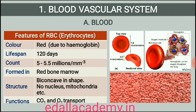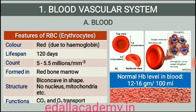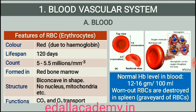RBCs are devoid of nucleus in most of the mammals and are biconcave in shape. They have a red-colored, iron-containing complex protein called hemoglobin, hence the color and name of these cells. A healthy individual has 12 to 16 grams of hemoglobin in every 100 milliliters of blood. These molecules play a significant role in transport of respiratory gases. RBCs have an average lifespan of 120 days after which they are destroyed in the spleen, the graveyard of RBCs.